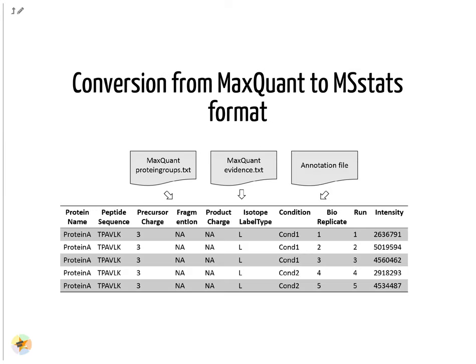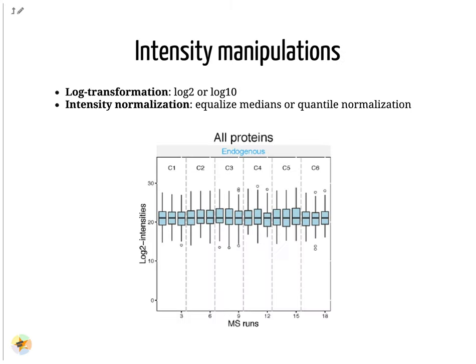First, the input data is converted into an MSstats-compatible table. For this step, several parameters to filter and adjust the input data can be selected. Log transformation brings the peptide intensities into a close-to-normal distribution. Normalization aims to make the intensities of different runs more comparable to each other. The default normalization method is called Equalize Medians. It assumes that the majority of proteins do not change across runs, and shifts all intensities of a run by a constant to obtain equal median intensities across runs.